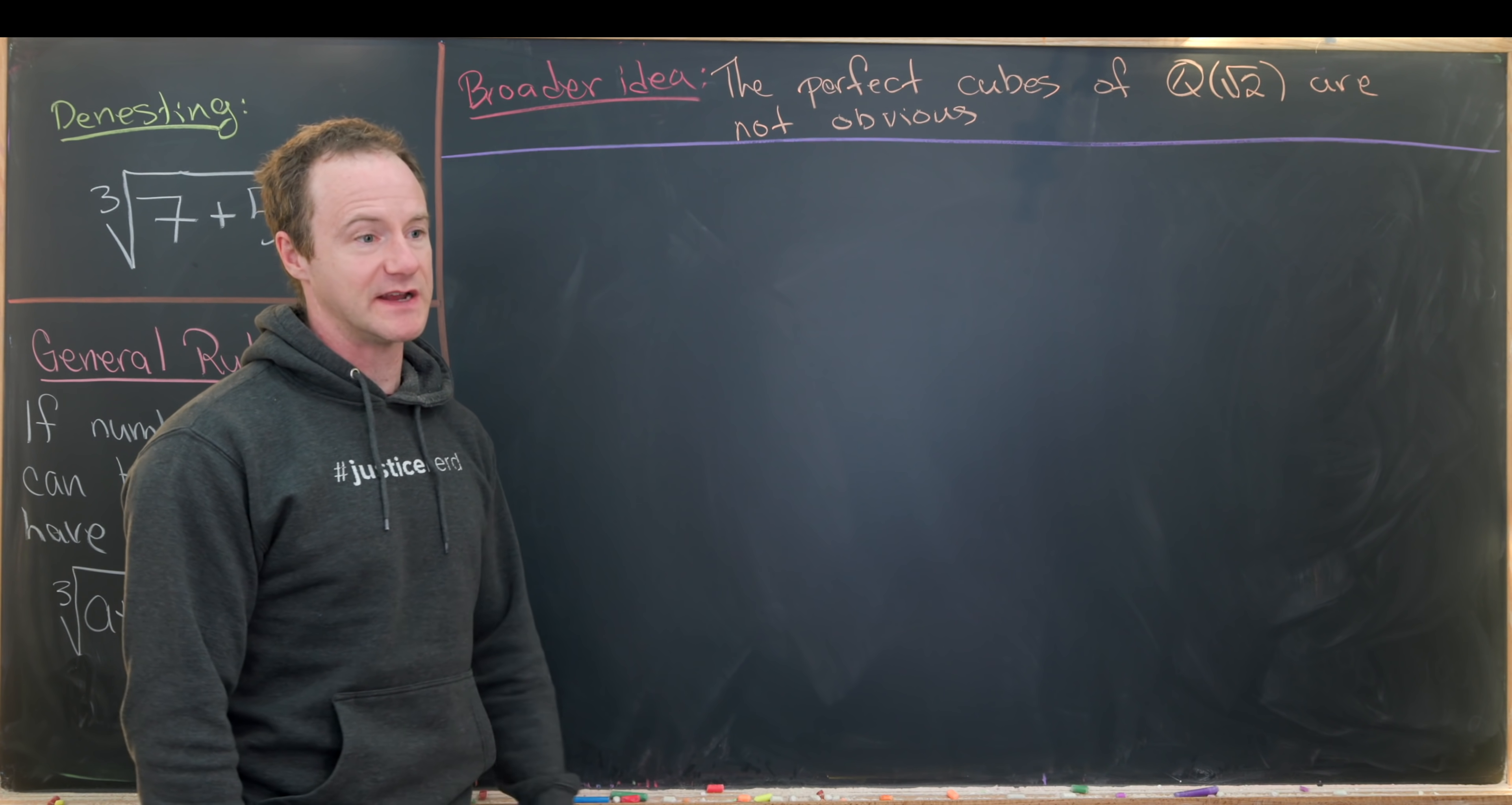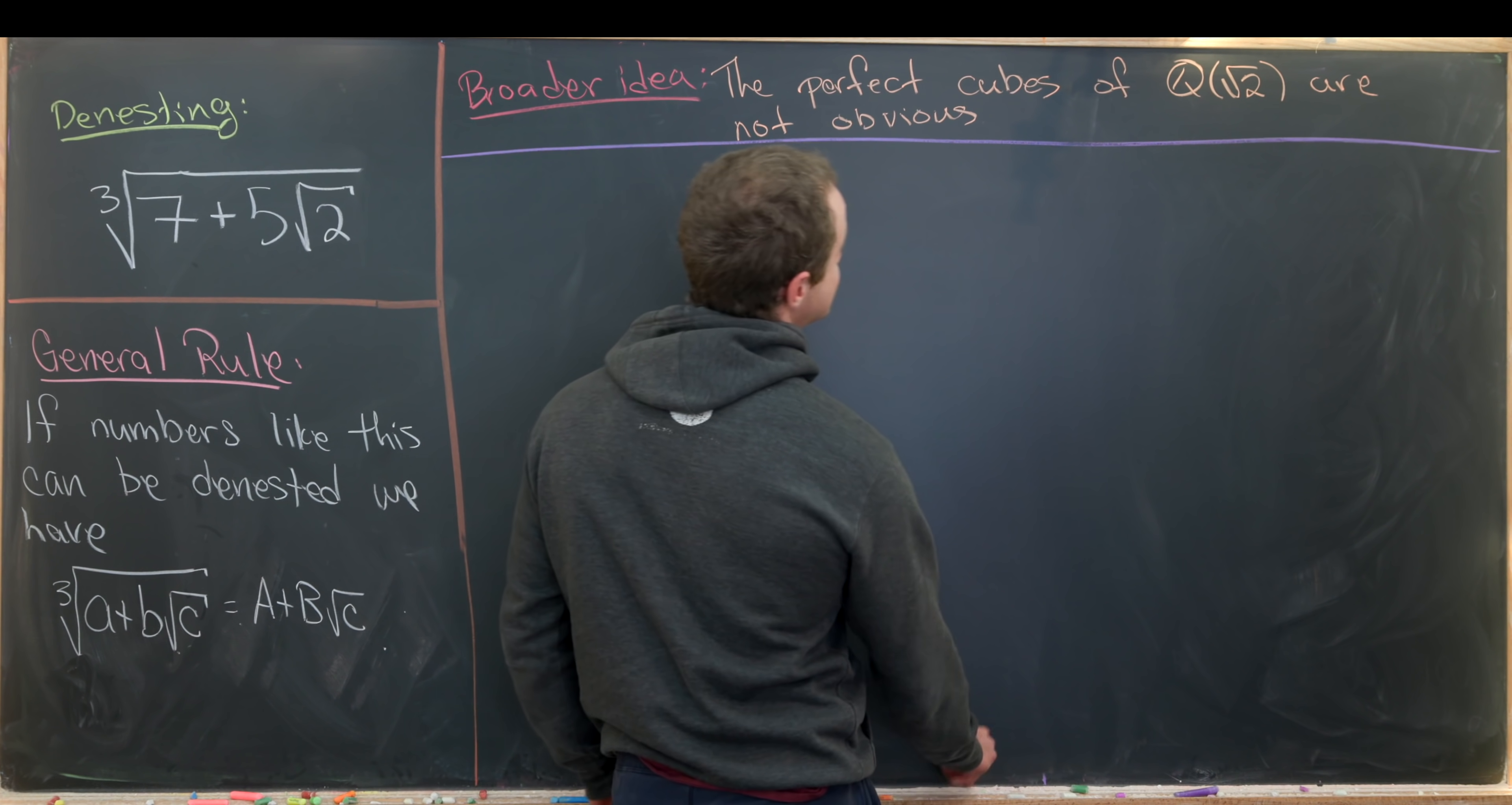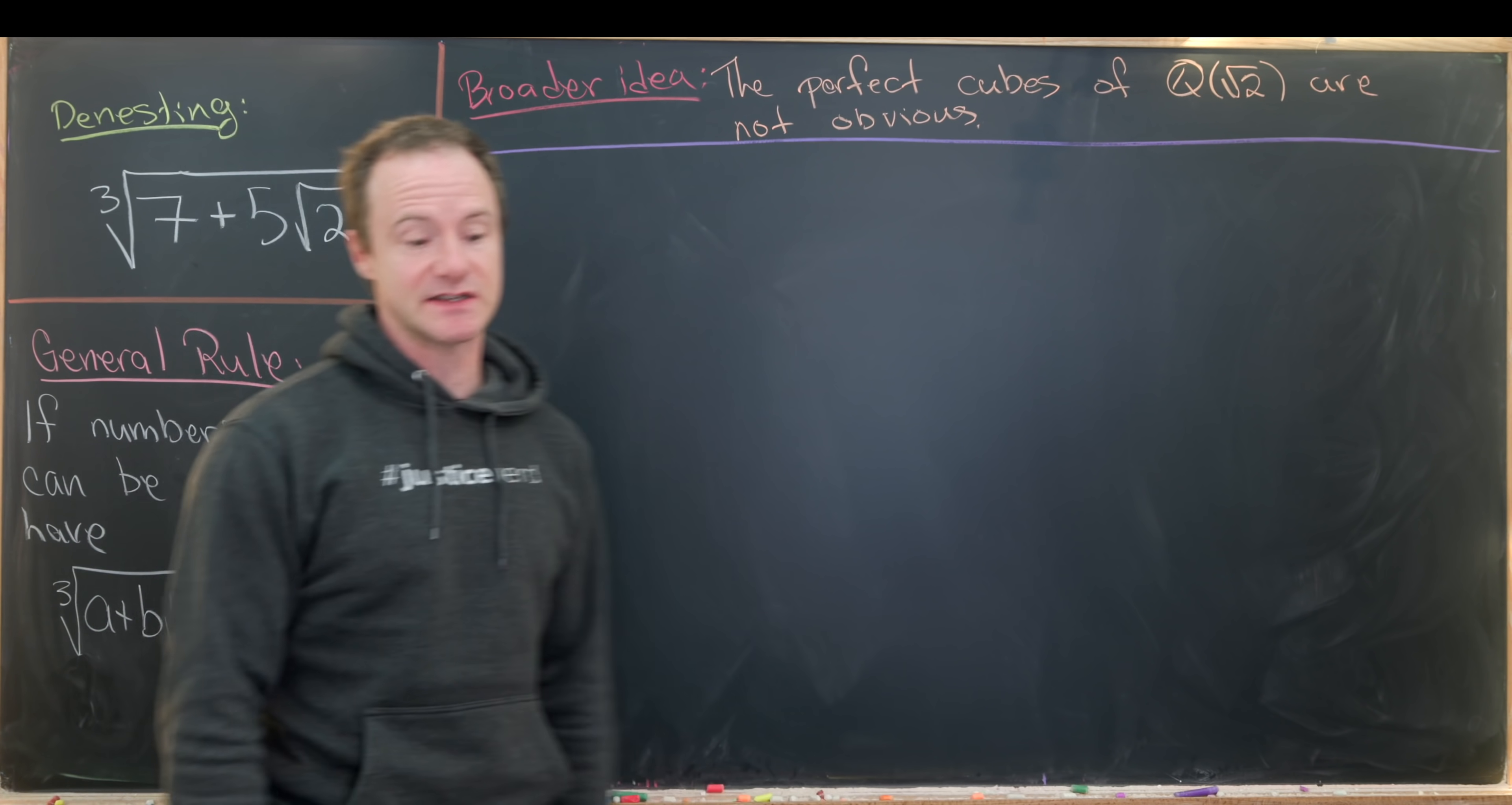And I think maybe the broad takeaway here if you want a takeaway that's more than just we did some nice arithmetic would be that the perfect cubes in the field Q adjoined root two are not obvious. Okay so all of this said let's maybe do the calculation that will denest this cube root.